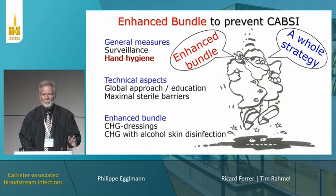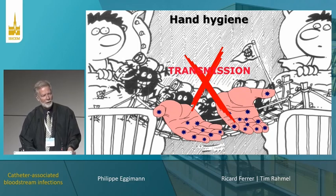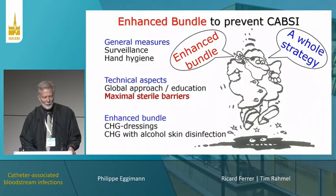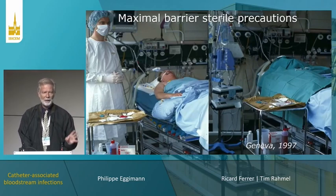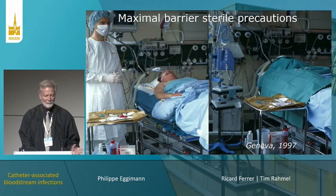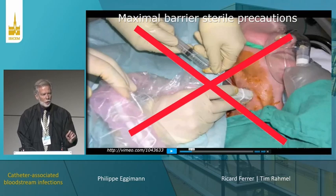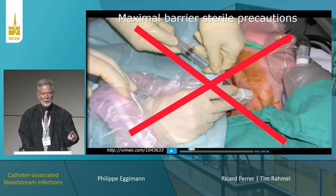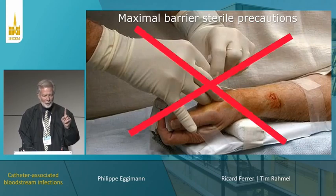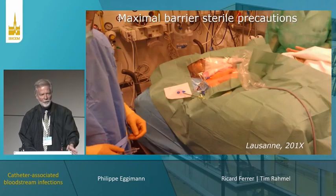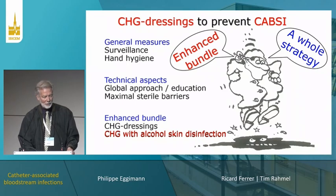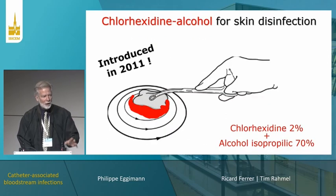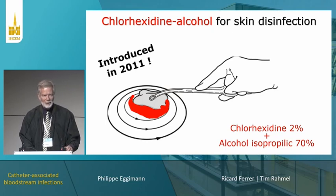Hand hygiene is very important to avoid transmission between patients via devices. We decided to enhance the bundle by implementing maximal sterile precautions, transforming catheter insertion in Geneva 25 years ago into a small surgical intervention. Poor insertion conditions, such as those seen with arterial catheters, should not be accepted. Technology and hygiene must be brought to the ICU bedside. We enhanced the bundle first by using chlorhexidine with alcohol to disinfect the skin.